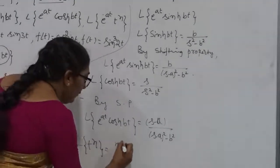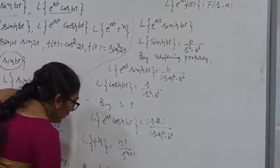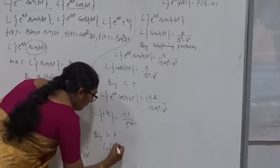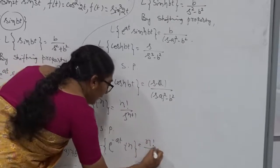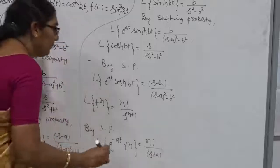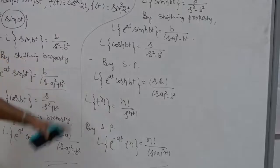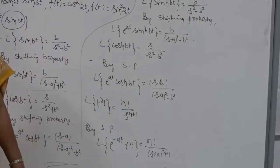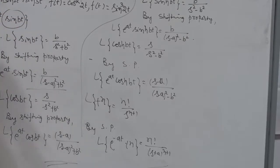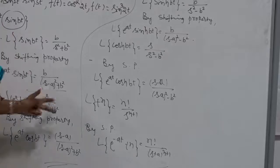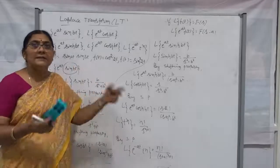For the case of e to the power At into t to the power n, the Laplace Transform of t to the power n is n factorial divided by s to the power n plus 1. By the Shifting Property, the Laplace Transform of e to the power At into t to the power n is n factorial divided by (s minus A) to the power n plus 1. Now everyone should be clear on how to operate the Shifting Property, what its use is, and how it simplifies Laplace Transform problems.